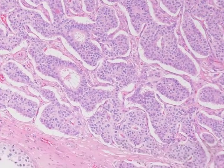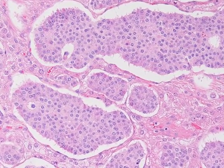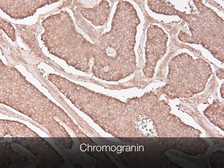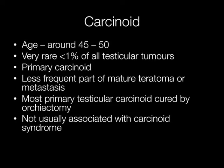This tumour is a carcinoid. They occur around the ages of 45 to 50 and are extremely rare — in fact less than 1% of all testicular tumours are carcinoids. Usually they are primary, but less frequently they may be part of a mature teratoma or a metastasis from a carcinoid elsewhere. Most primary testicular carcinoids are cured by orchiectomy and are not usually associated with the carcinoid syndrome.